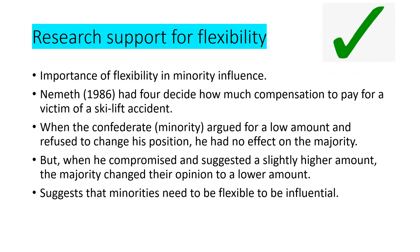I've put two additional evaluation points here as I find the textbook is vague on the last two points. Research support for flexibility: Nemeth in 1986 had four people with one confederate as the minority, and they had to decide how much compensation to pay for a victim of a ski lift accident. When the confederate argued for a low amount and refused to change his position, he had no effect on the majority. But when he compromised and suggested a slightly higher amount - though not as much as the group suggested - the majority changed their opinion to a lower amount. This suggests that minorities need to be flexible if they want to be influential.